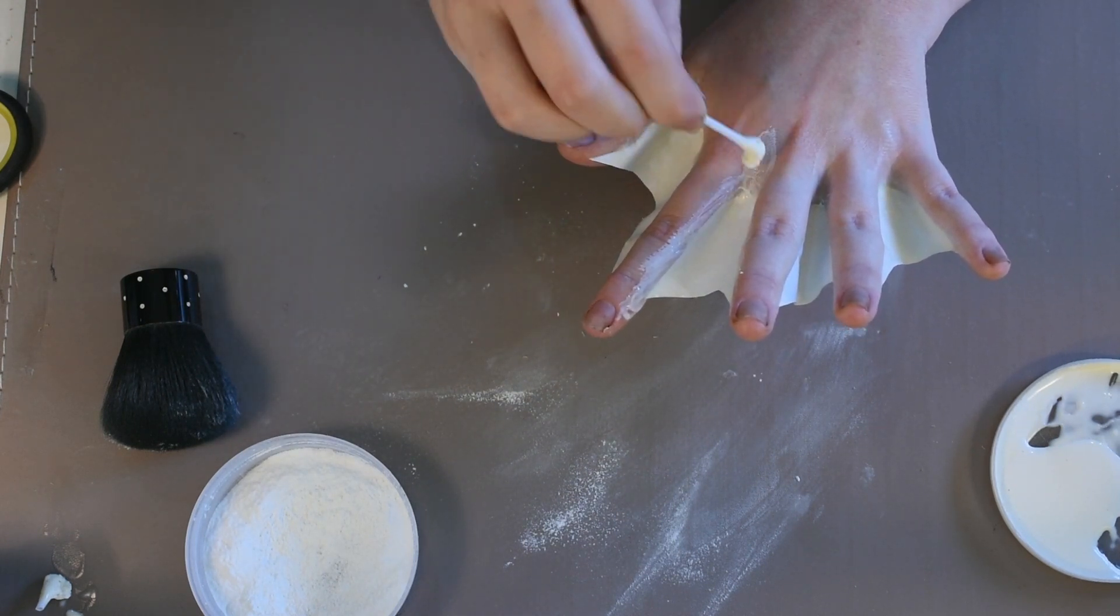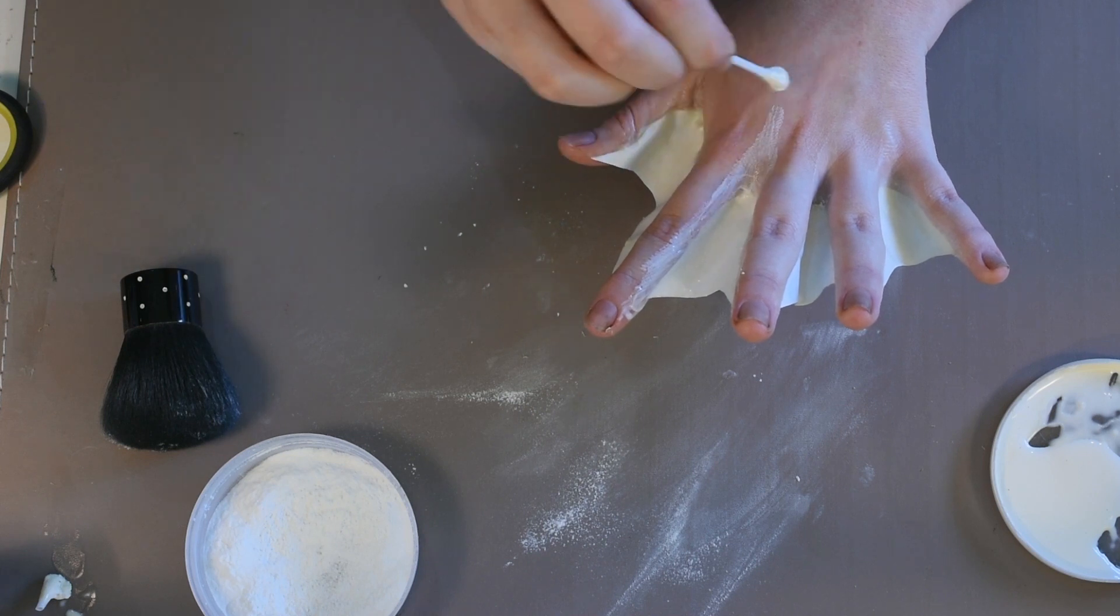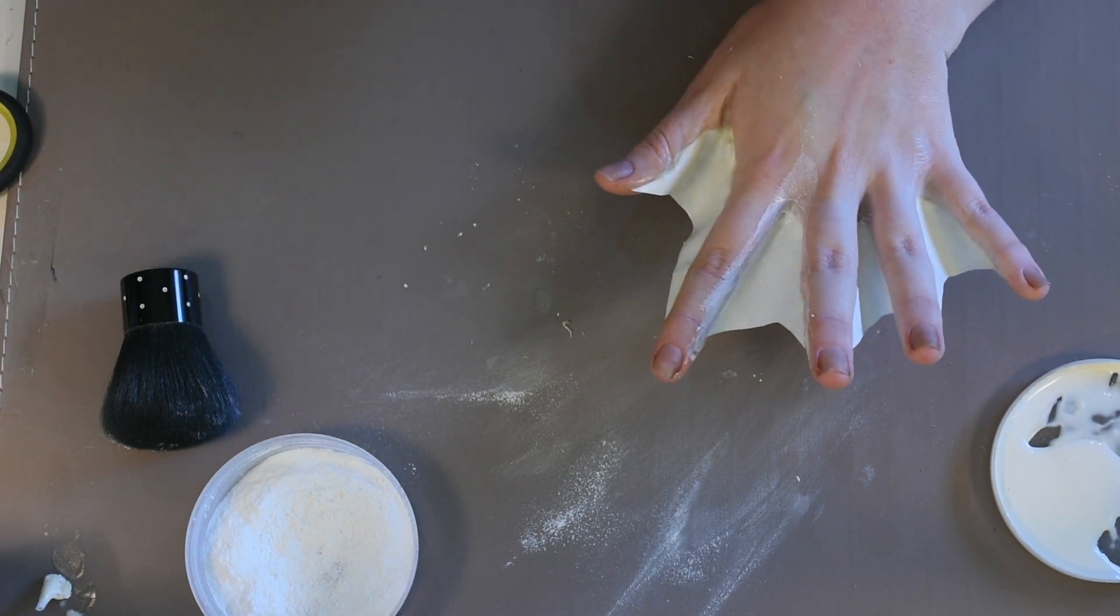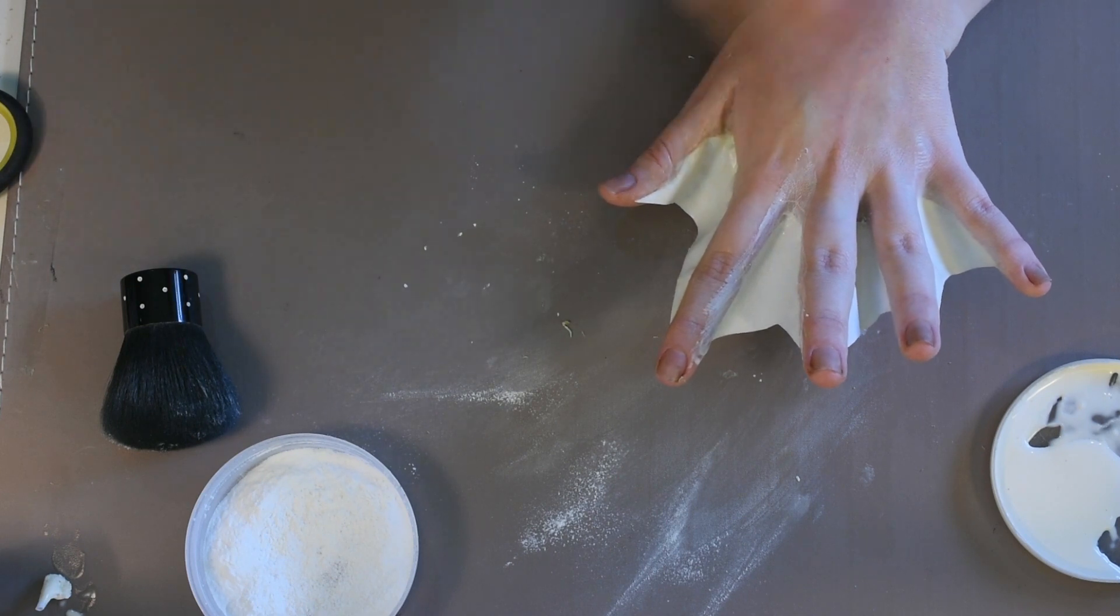The good thing about liquid latex is if you bugger something up and act quick enough, you can fix it. Here you see me just wipe away a V-shape and redo it because I didn't like what was happening with it.